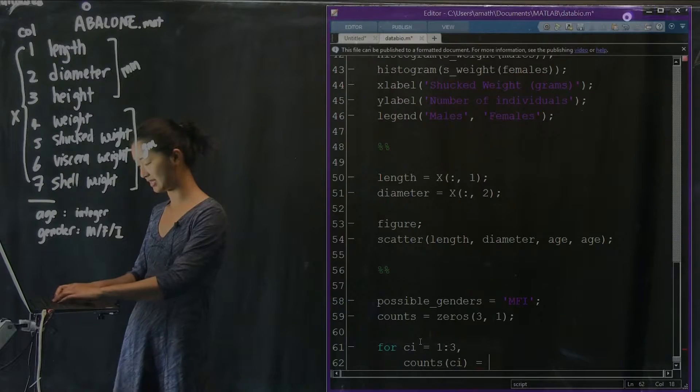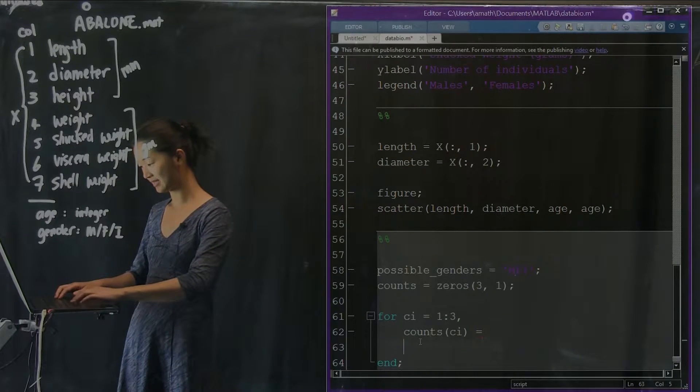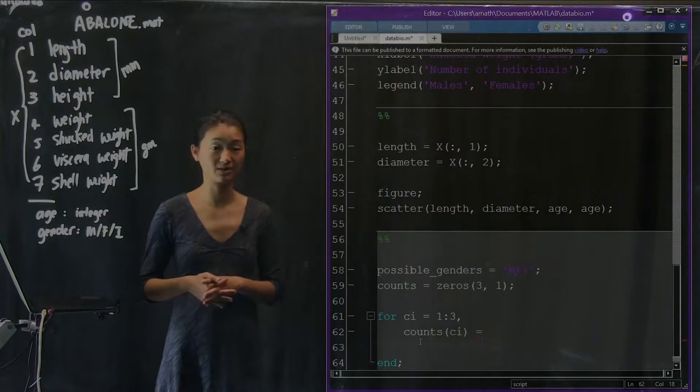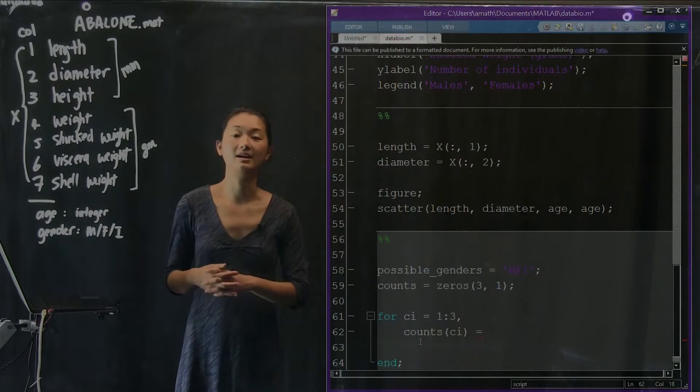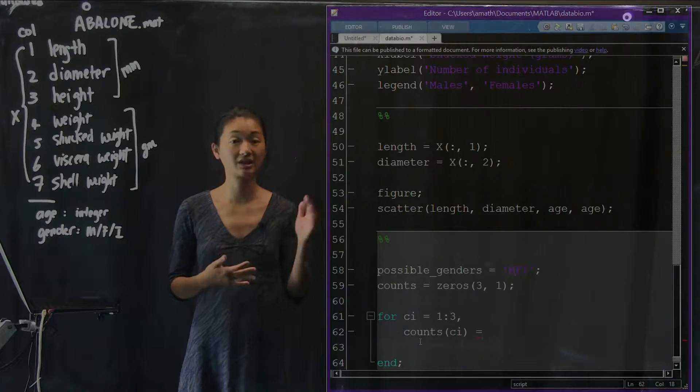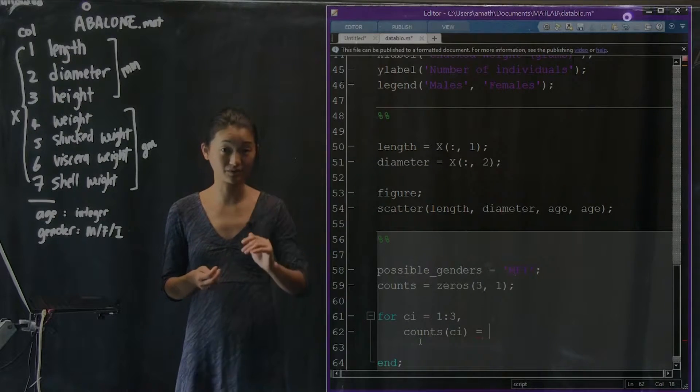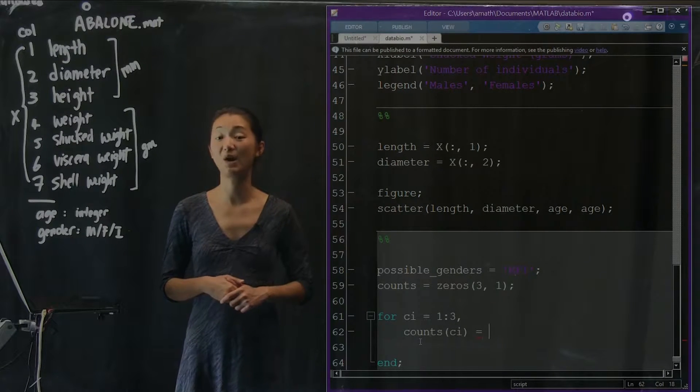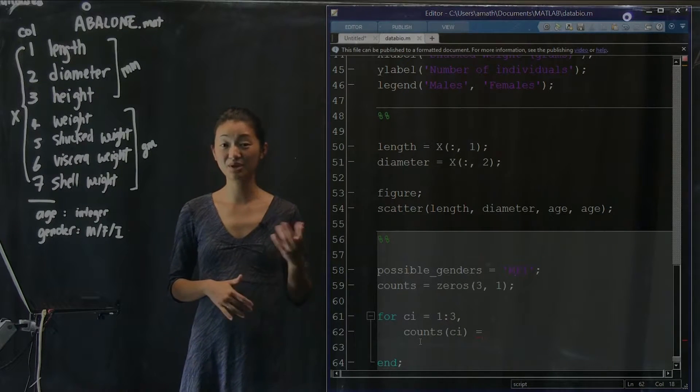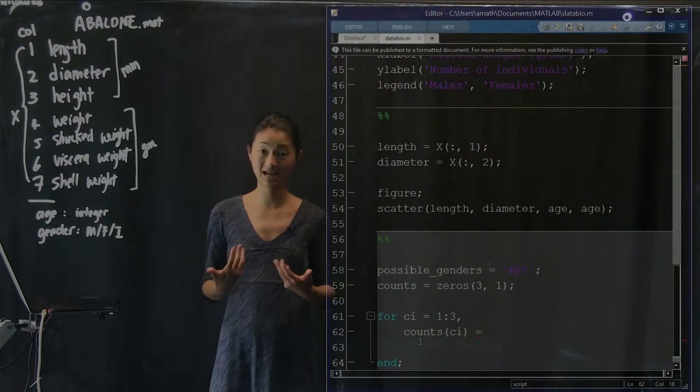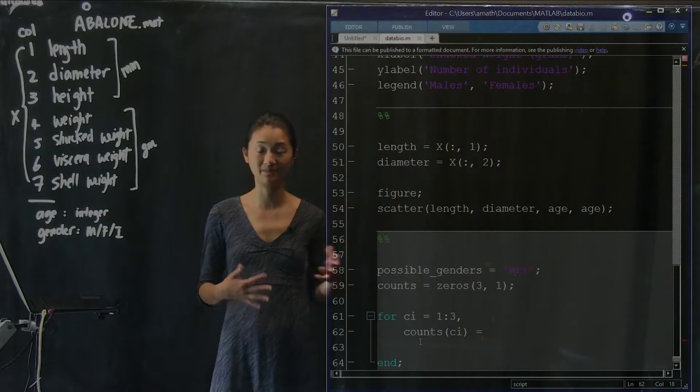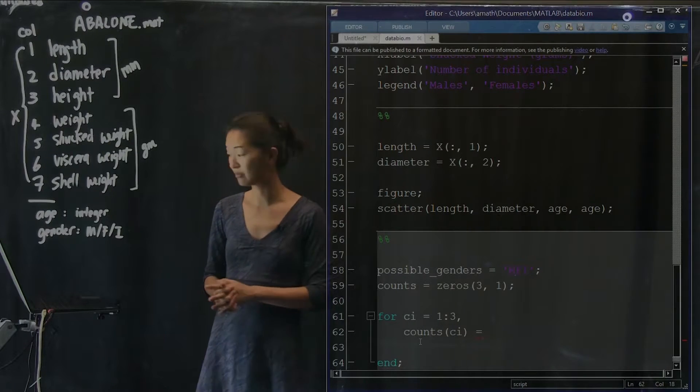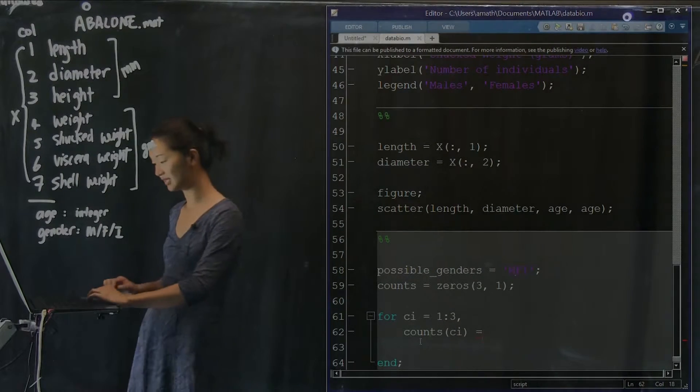Before the way that we found the males and females was by using the find command. And that works really well if you actually want the indices of the individuals that are female or male. But in this particular case, all we want to know is how many there actually are. So there's a shortcut for doing this kind of command, which is pretty handy because it saves you from having to actually find the indices and then count how many indices there are. What we're going to do is write a conditional statement.